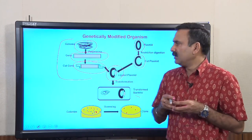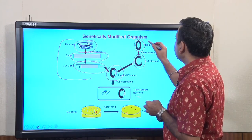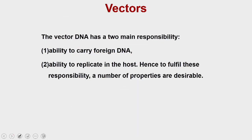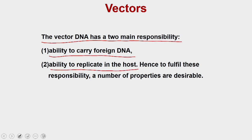Following this discussion, today we are going to discuss the transforming agents. The transforming agents which carry the foreign gene are called vectors. The purpose of a vector is that it is the DNA which has two responsibilities: it should have the ability to carry a foreign DNA, and it should have the ability to replicate in the host.